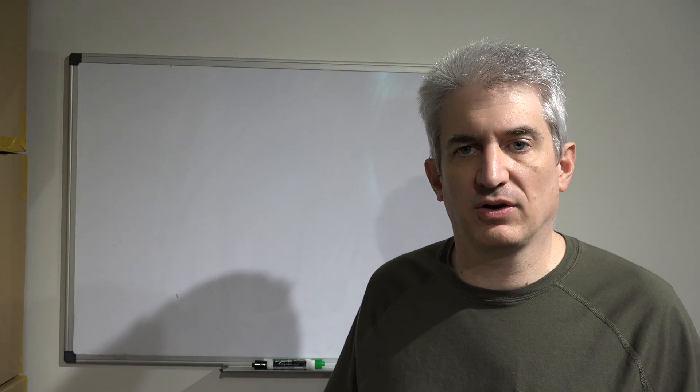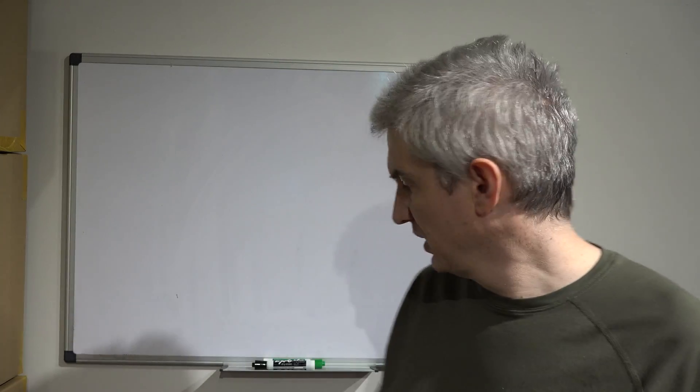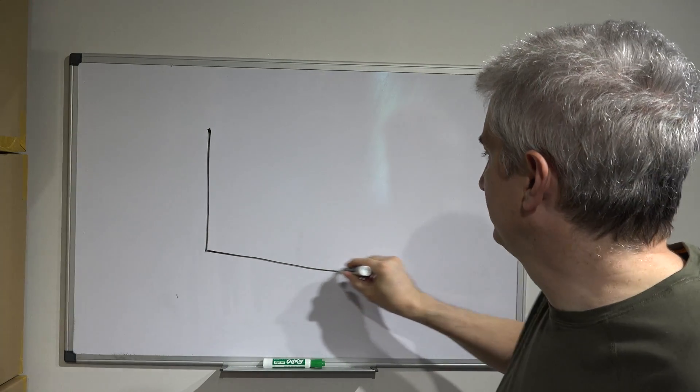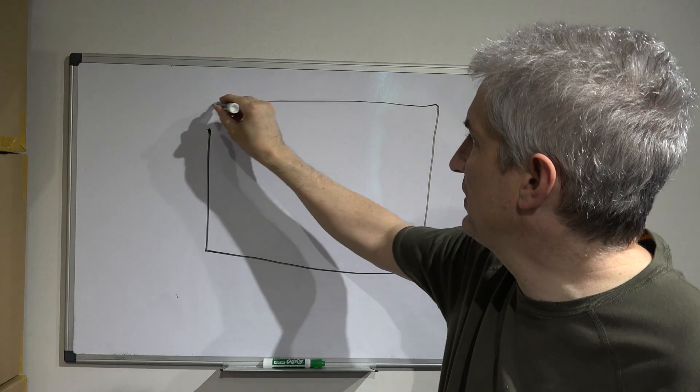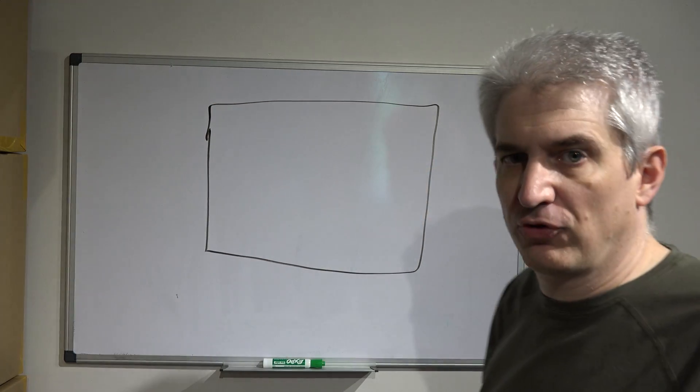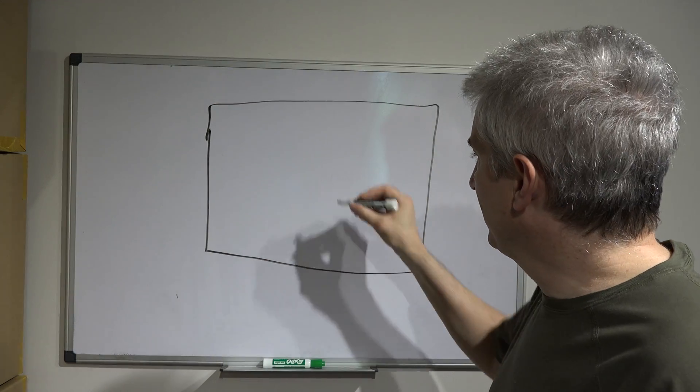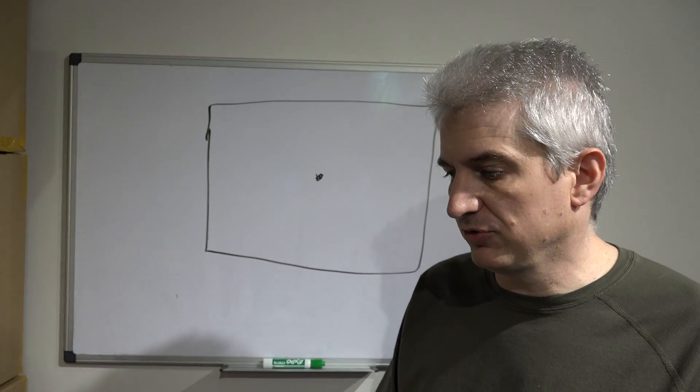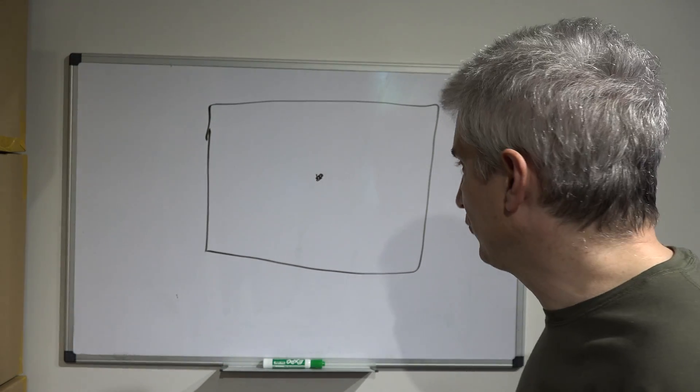Okay, so let's talk about 2.4 versus 5 gigahertz frequencies. So let's say we have a house here. This is a top-down view of our house. I'm not going to bother drawing a bunch of walls in there. And let's say our router just happens to be located directly in the center of the house, just to make things more simplistic.